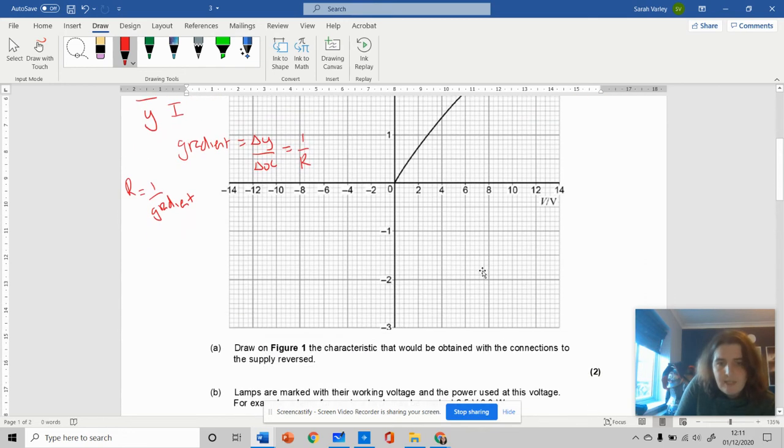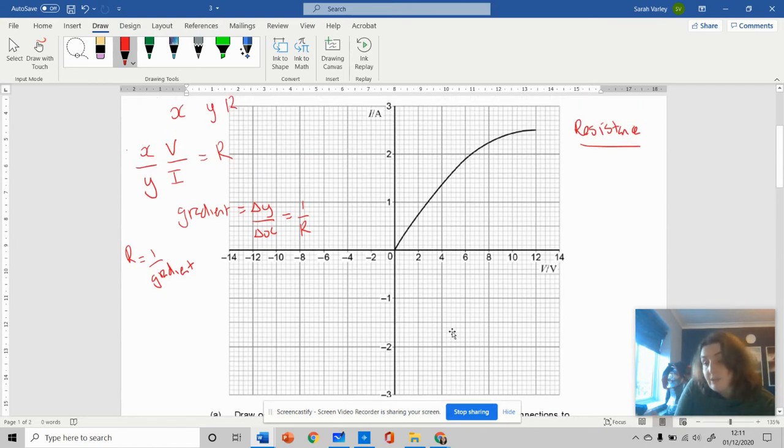Question one asks to draw what happens if the connections to the supply were reversed. This is not a diode, it allows current to flow both ways. At 12 volts I'll have 2.5 amps here. I eyeball points from this - at about 2.4 volts I get 1 amp. I'm just mirroring this.